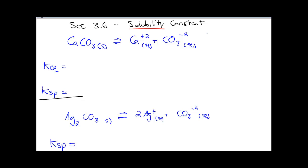In chapter 2 we had KEQ; we're just replacing it with KSP, where the EQ was for equilibrium, and now the SP is going to be for solubility product. The rules for writing out the KEQ are products over reactants, coefficients are exponents, ignore liquids and solids. So we're going to get Ca²⁺ and CO₃²⁻. There are no coefficients, so there are no exponents.